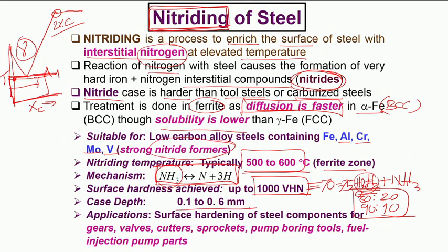The case depth can be from 0.1 to 0.6 millimeters, close to a millimeter, and applications cover a very wide range of steel components: gear components, valves, cutters, slicing equipment, sprockets, boring tools, pump devices, fuel injection pump parts, nozzles, and various other applications. It is also very widely used not only for ferritic steel but also austenitic stainless steel.